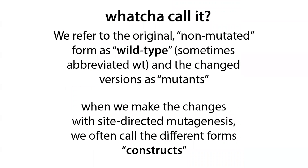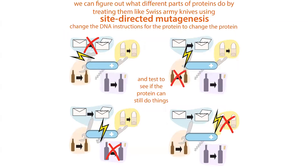More specifically, when we make these changes in the lab, we often refer to the different forms as constructs. We can make these different constructs using a technique called site-directed mutagenesis, where we introduce mutations into the DNA to make changes to the protein. This allows us to see which parts of the protein are important for which functions, as well as make truncations in order to more easily study a protein.